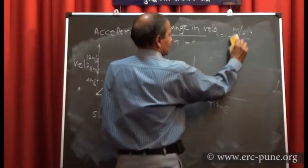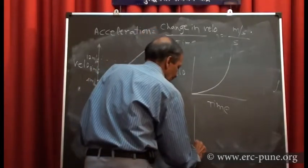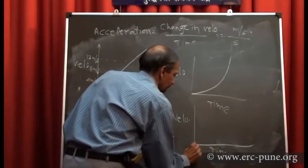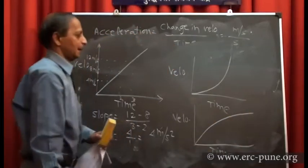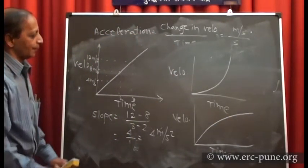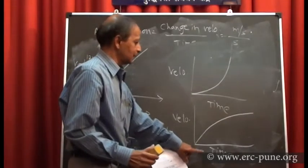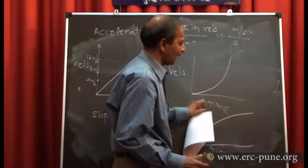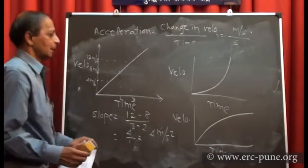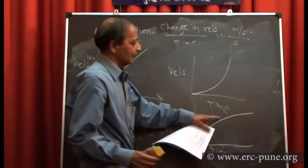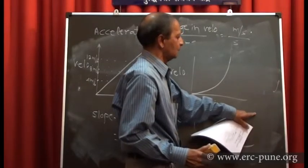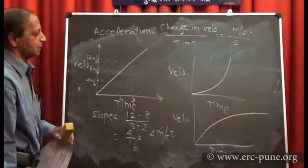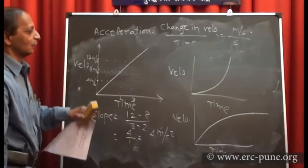If you get a velocity-time graph that curves and then flattens, initially your velocity is increasing at a faster rate, but as time passes the increase becomes less and less. We can say the velocity is initially increasing but finally the rate of increase is decreasing. When the graph becomes parallel to the time axis, velocity reaches a saturation — maximum — value and is no longer changing.